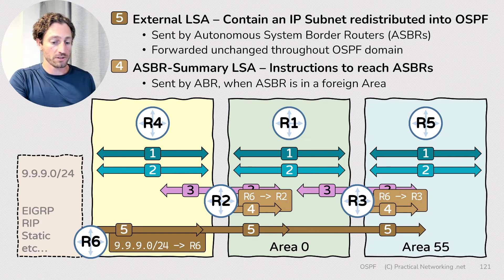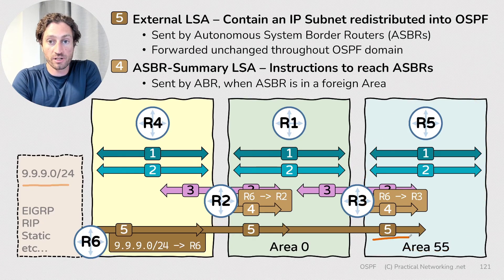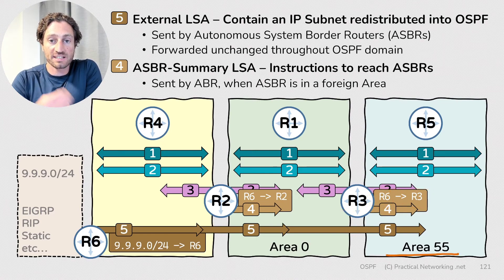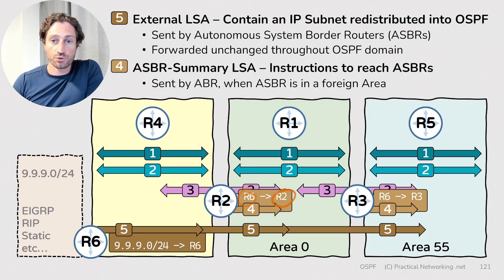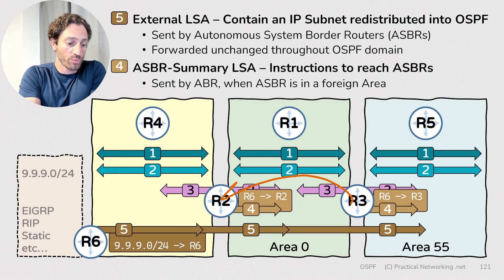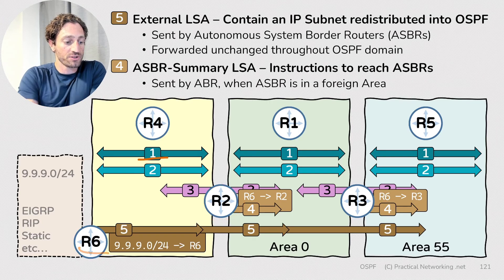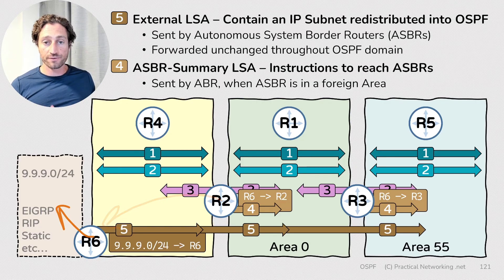So in the end, the routers in Area 55 will know that to reach the foreign redistributed network they have to use the ASBR Router 6, and they'll know how to reach Router 6 by using Router 3. Any traffic from Area 55 going to the redistributed network will be sent to Router 3, who will pass it to Router 2. Router 2, who knows where Router 6 is because of Router 6's Type 1 LSA, will forward the packet to Router 6, which will then forward it into the foreign autonomous system.